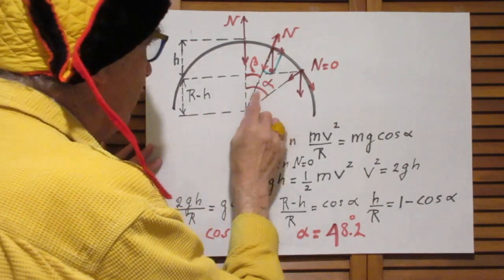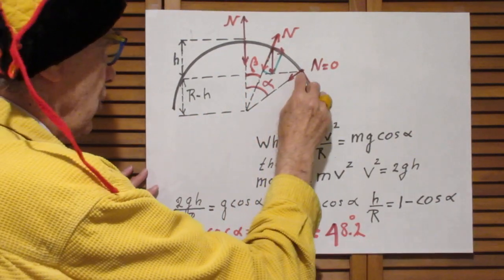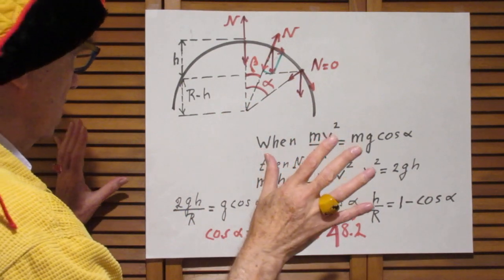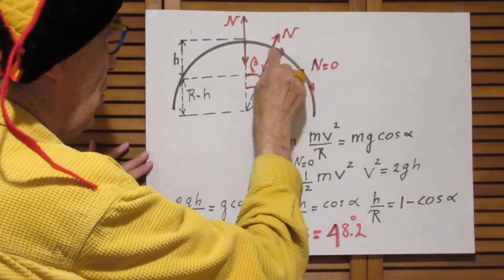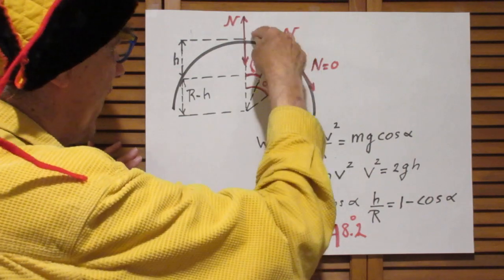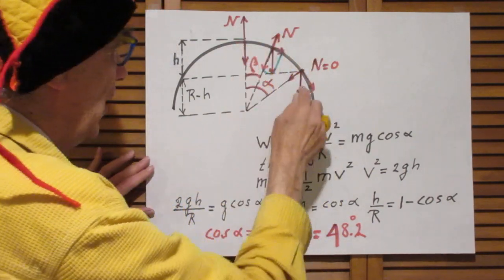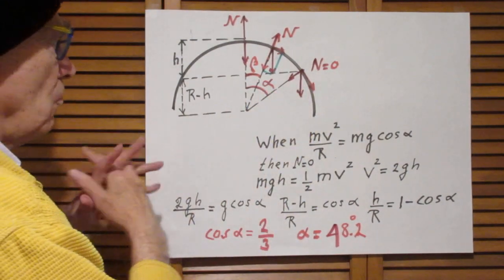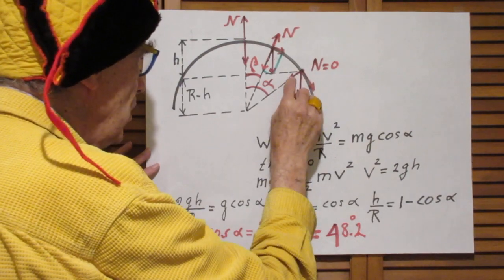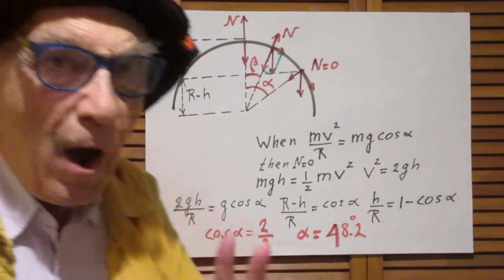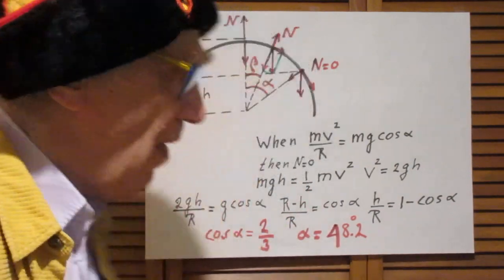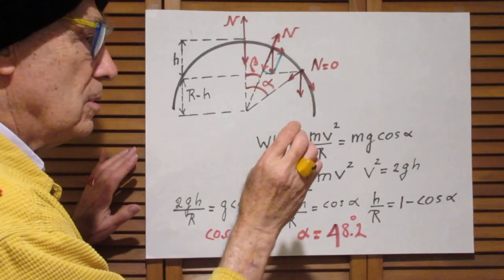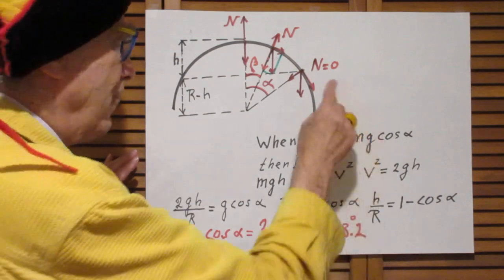So now we go to the angle alpha. So the force on the object, on the person, is still mg down. That doesn't change. And this component, the tangential component, that is the one that accelerates it along the curve, this one is mg sin alpha. And this one is mg cos alpha. But now the speed is so large that this force alone is needed for the centripetal force. Therefore n goes to zero.